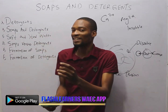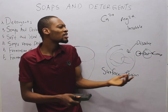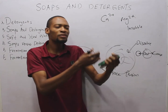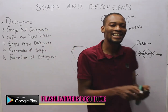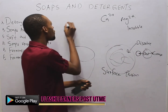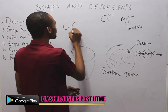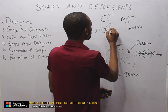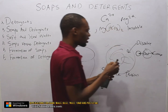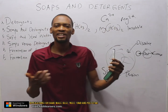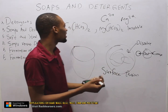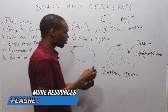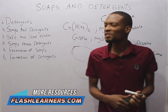Temporary and permanent hardness are types of hardness in water. Temporary hardness is hardness in water that can be removed by boiling. To remove temporary hardness, we boil or we add slaked lime. The compounds responsible for temporary hardness are the calcium and magnesium bicarbonate salts, and their presence results in temporary hardness.